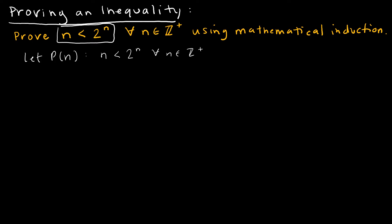Then I'm going to start with my basis step. The basis step is just showing whatever the lowest value is, and because I'm dealing with positive integers, that would be 1. So I'm going to show that p of 1 is true. 1 is less than 2 to the 1st, which is 2. 1 is less than 2 — that is true. So I've shown the basis step.